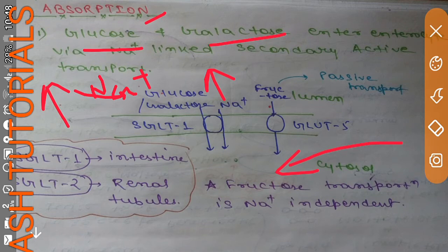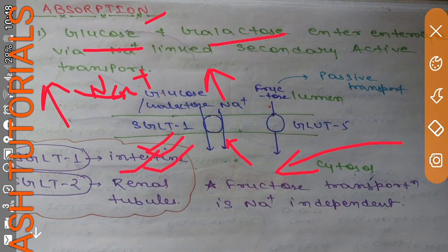This happens because glucose, galactose, and sodium use the same co-transporter. This co-transporter is known as sodium-dependent glucose transporter 1 (SGLT1), which is present in the intestine. Sodium-dependent glucose transporter 2 (SGLT2) is present inside the renal tubules.